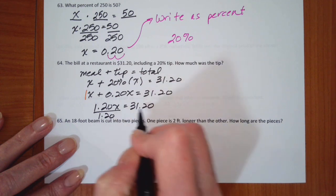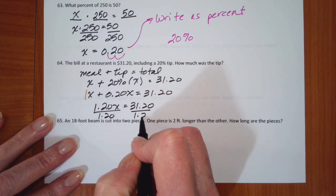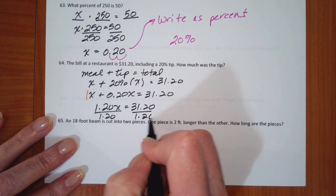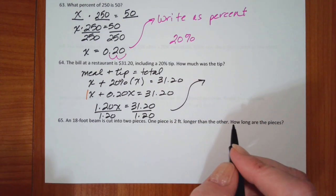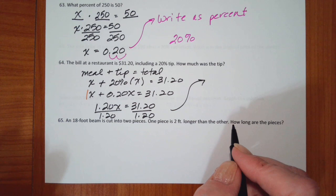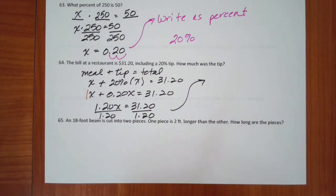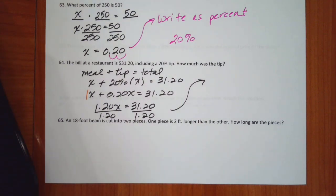So 1 plus 0.20 gives me 1.20x is equal to $31.20. And then I'll divide by 1.20. And what do I get for the meal? So $31.20 divided by 1.20.